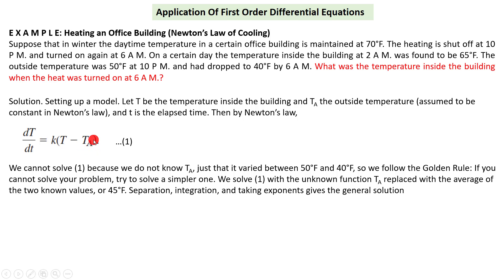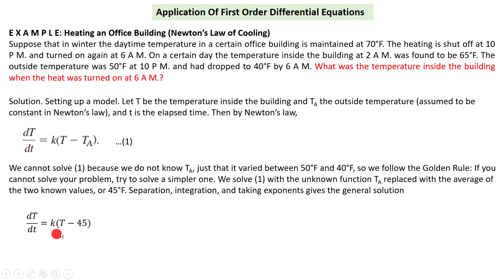We cannot solve this equation directly; we have to replace T_a with a constant. At 10 p.m. the temperature was 50°F, and it dropped to 40°F at 6 a.m. The most reasonable value is the average, which is 45°F. So Newton's Law becomes this equation with T_a replaced by 45.